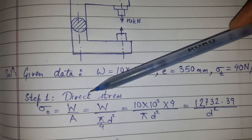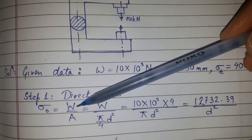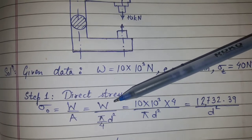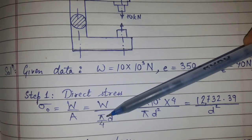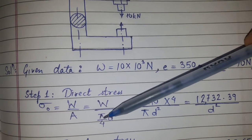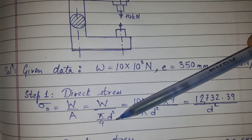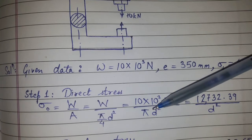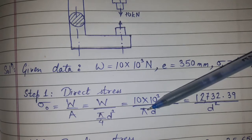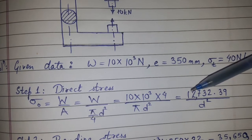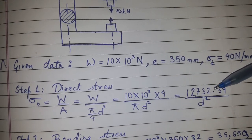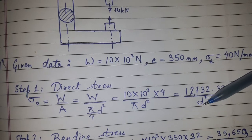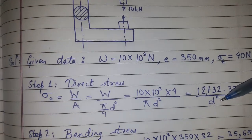Step 1: Direct stress. σ_d = W/A = W/(π/4 × d²), as this is a circular cross section. When we substitute the values of W and π, we get 12,732.39/d². Here d is the unknown diameter.